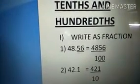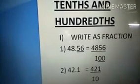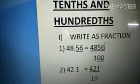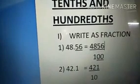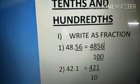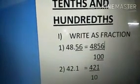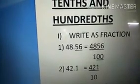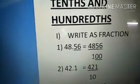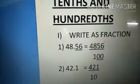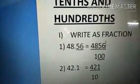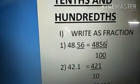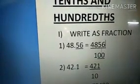Then you count the digits after the decimal — 1, 2. I underline those 2 digits. So in the denominator, I add 2 zeros: 1, 0, 0. That gives us 100. So our answer is 4856 divided by 100.